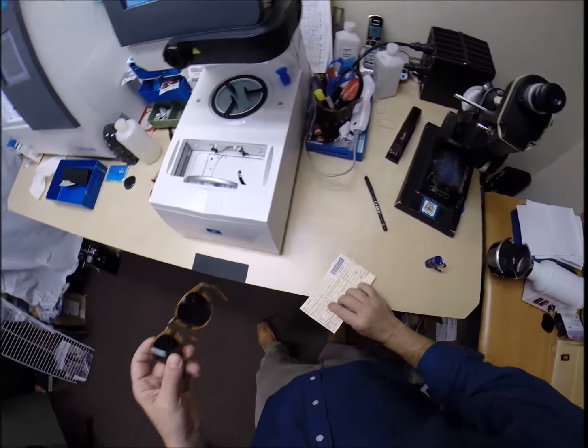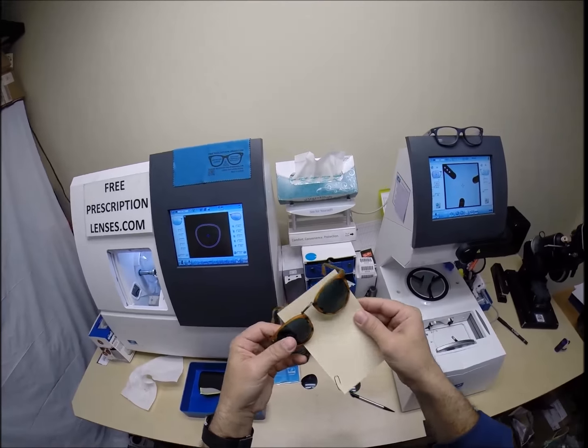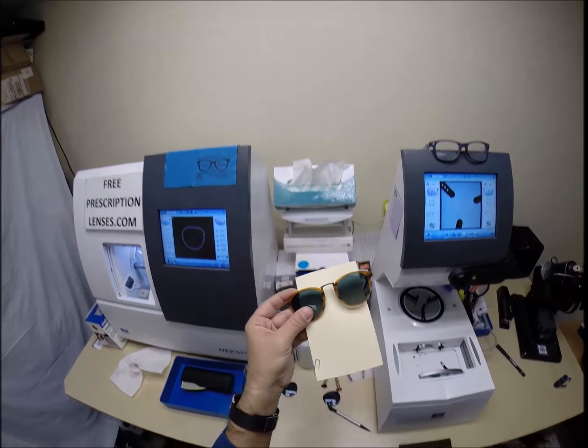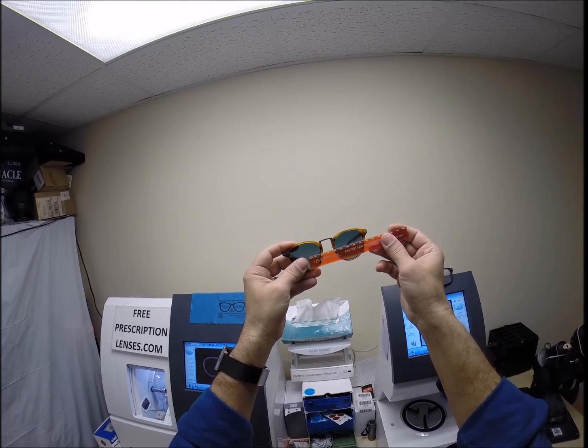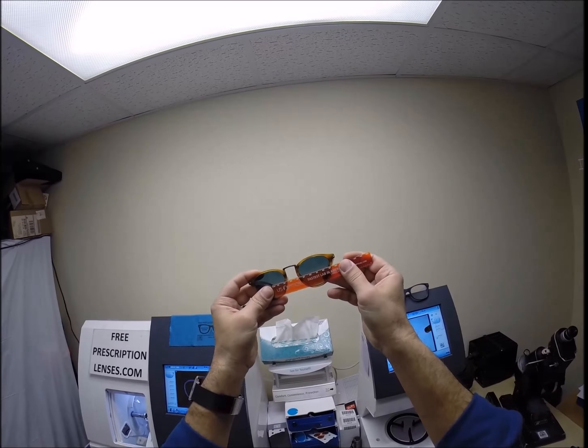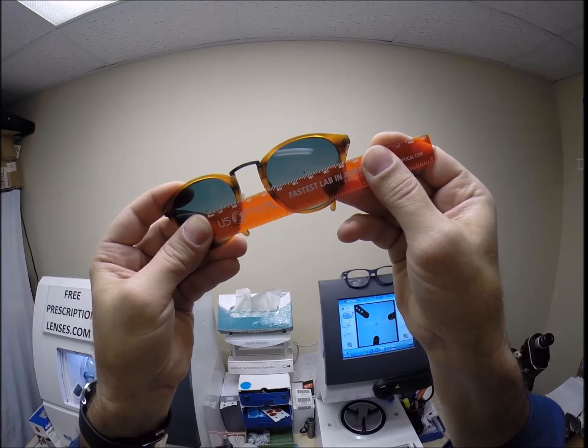So, your pupillary distance. 33 for the right eye. 33.5 for the left. A combined value of 66.5. Actually, I may have to do it without that. Use the wall as the background. Place the PD stick against my thumb on your right lens. And then, when we hold it up to the left lens, we're getting 66.5. So, that is cut perfectly.